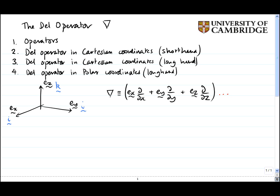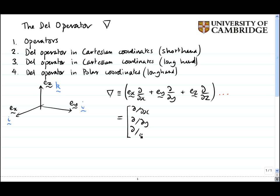Note two things: first, it's a vector with three components ex, ey, and ez; and second, it's an operator — everything in it wants to act on whatever is on the right-hand side. In Cartesian coordinates we can write this in shorthand as a column vector with d/dx on top, d/dy in the middle, and d/dz at the bottom — a one-column matrix, i.e. a vector. That's our Cartesian shorthand. Now let's look at a couple of examples.